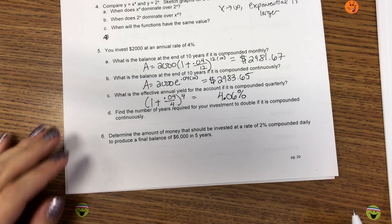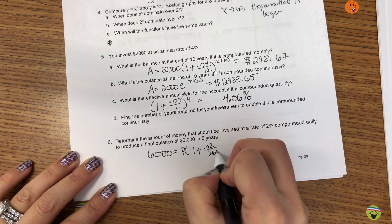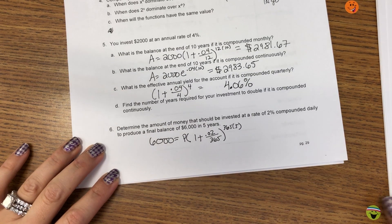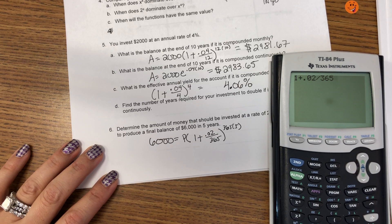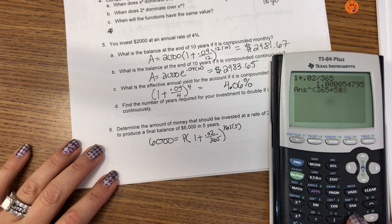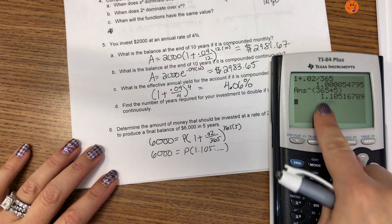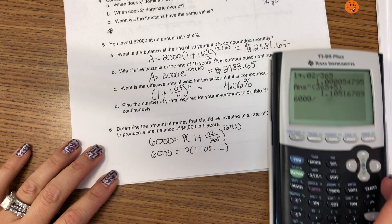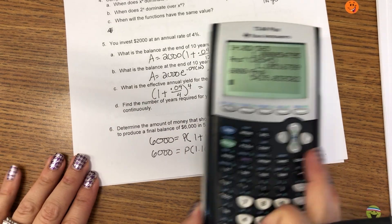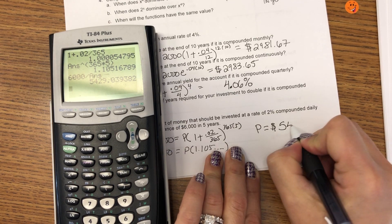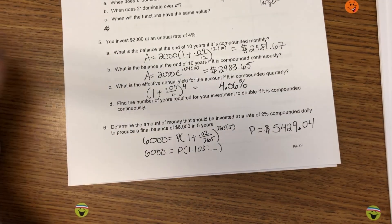Alright, number six. Determine the amount of money that you should invest to get $6,000 compounded daily for five years. Okay, so I'm going to type this all in my calculator. 6,000 equals P times 1.105 dot, dot, dot, dot. So, to solve, I'm going to divide this number to the left. But I want to use the whole decimal. So, in my calculator, I'm going to do second negative. And it copies and pastes the whole answer for me to get an exact value of $5,429.04.